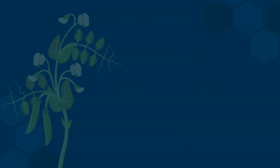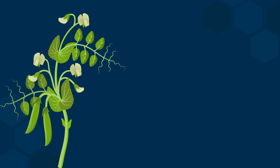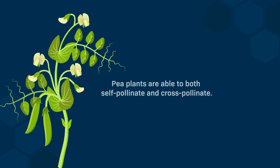Mendel studied the transmission of traits in pea plants. He used pea plants because true breeding plants can, through self-pollination, yield offspring with identical phenotypes to the parent. Pea plants can also cross-pollinate between true breeding parents. Mendel used these methods of pollination to study the transmission of inherited traits.